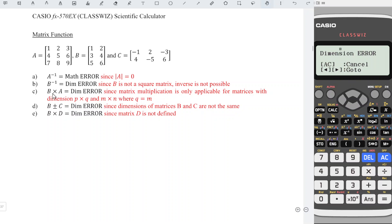Part C, matrix B times A. So press AC again. Option, get matrix B, 4, times option, get matrix A, 3, and we press equal. We obtain dimension error again.